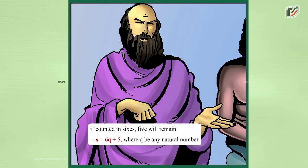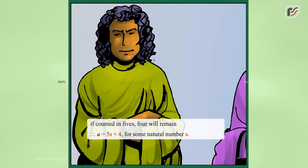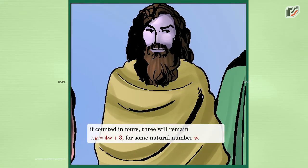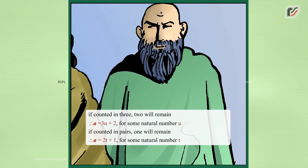If counted in sixes, five will remain. Therefore, a is equal to 6q plus 5, where q is any natural number. If counted in fives, four will remain. Therefore, a is equal to 5s plus 4 for some natural number s. If counted in fours, three will remain. Therefore, a is equal to 4r plus 3. If counted in pairs, one will remain. Therefore, a is equal to 2t plus 1 for some natural number t.